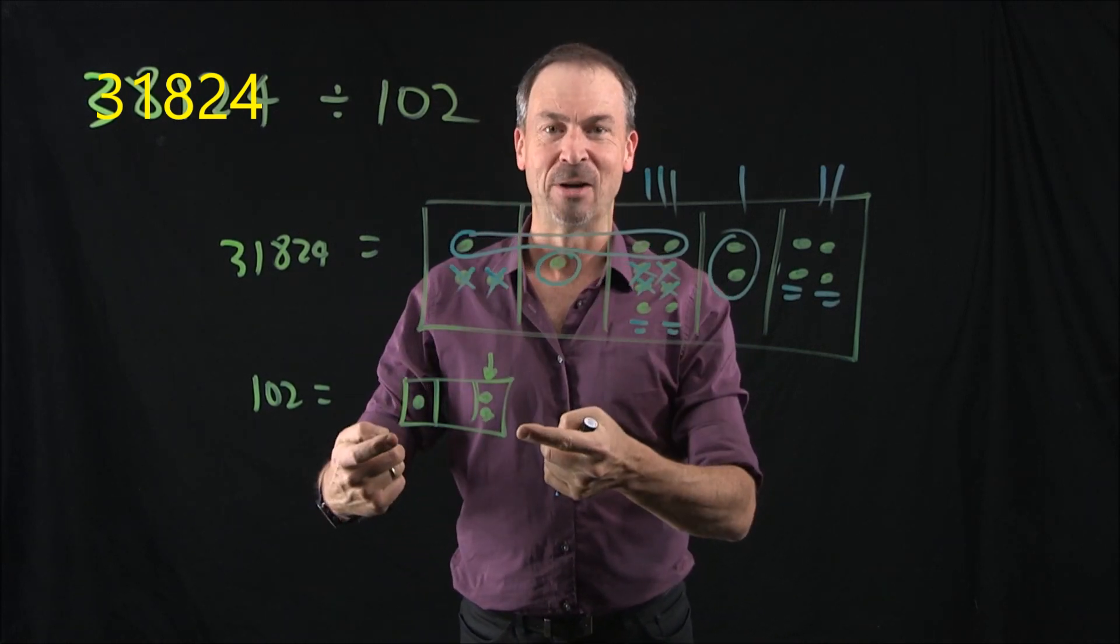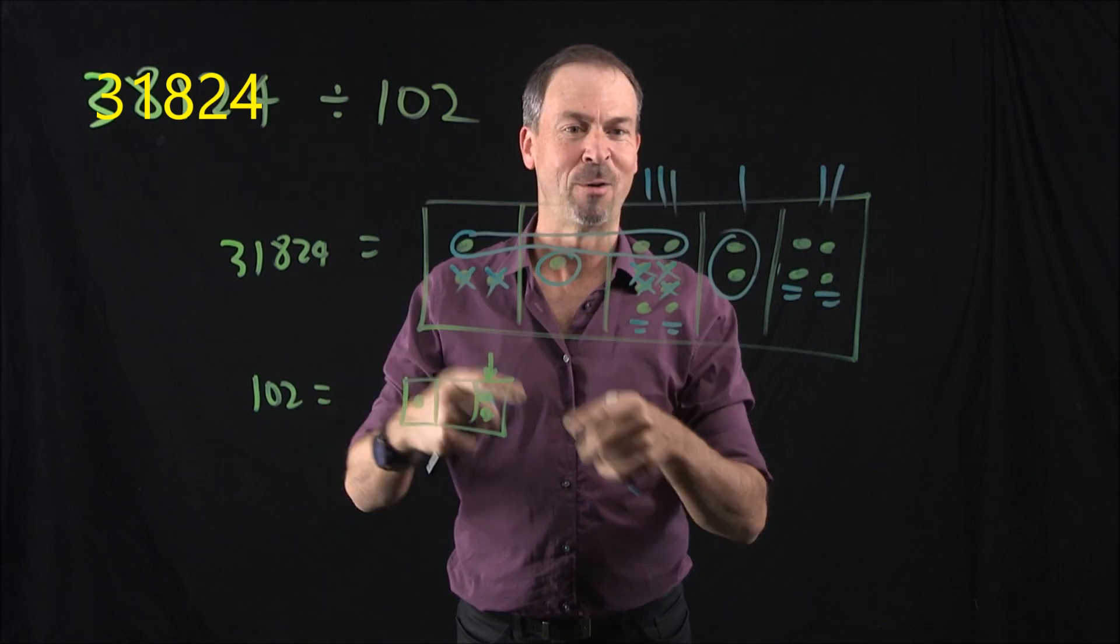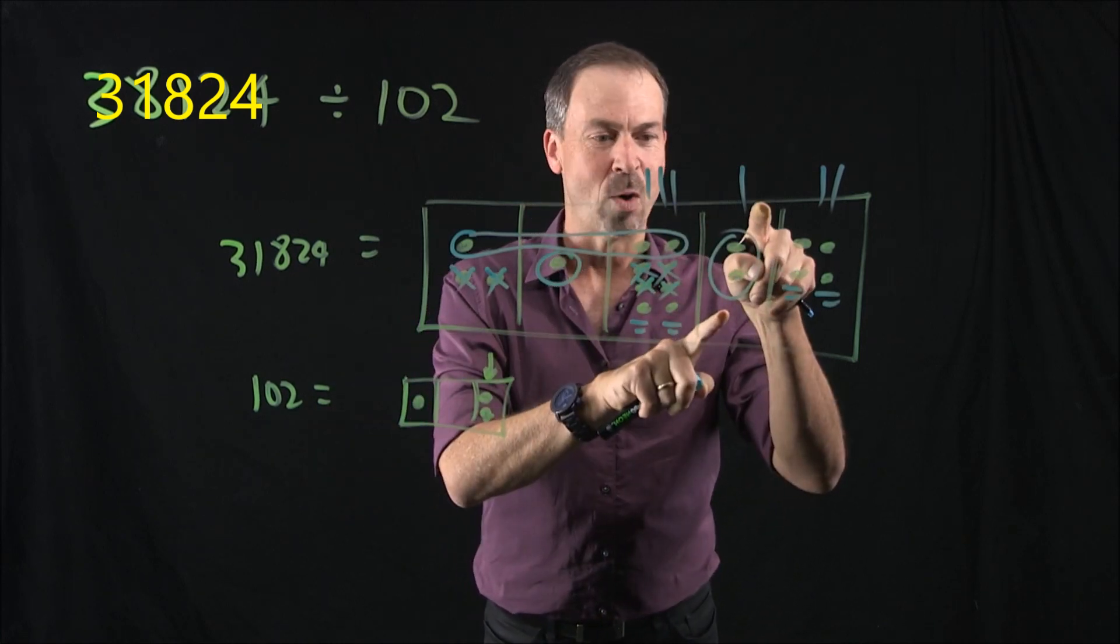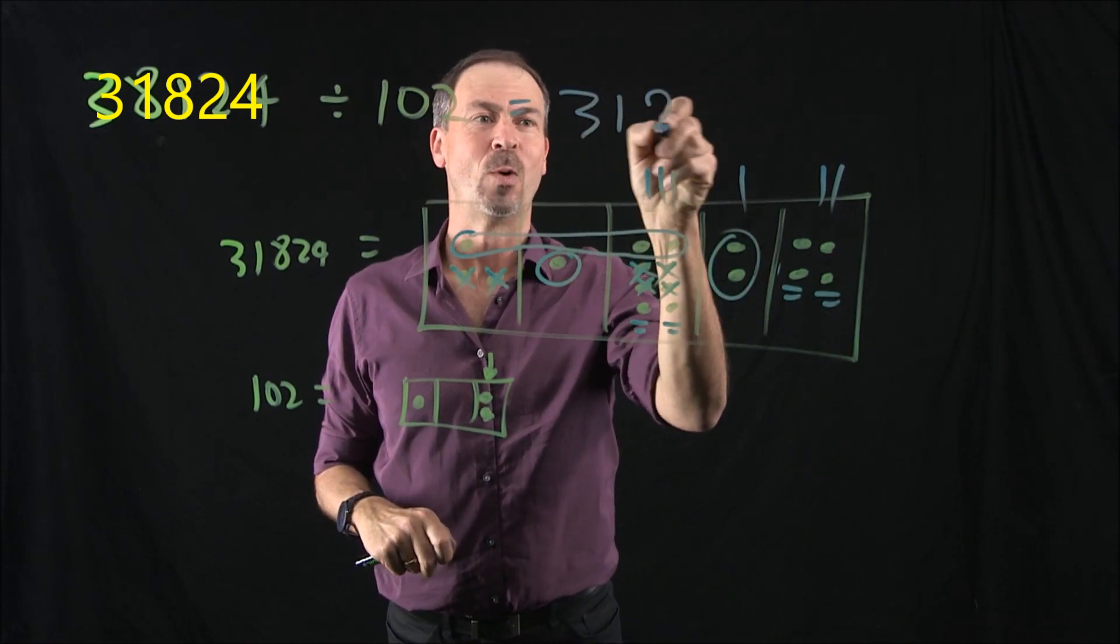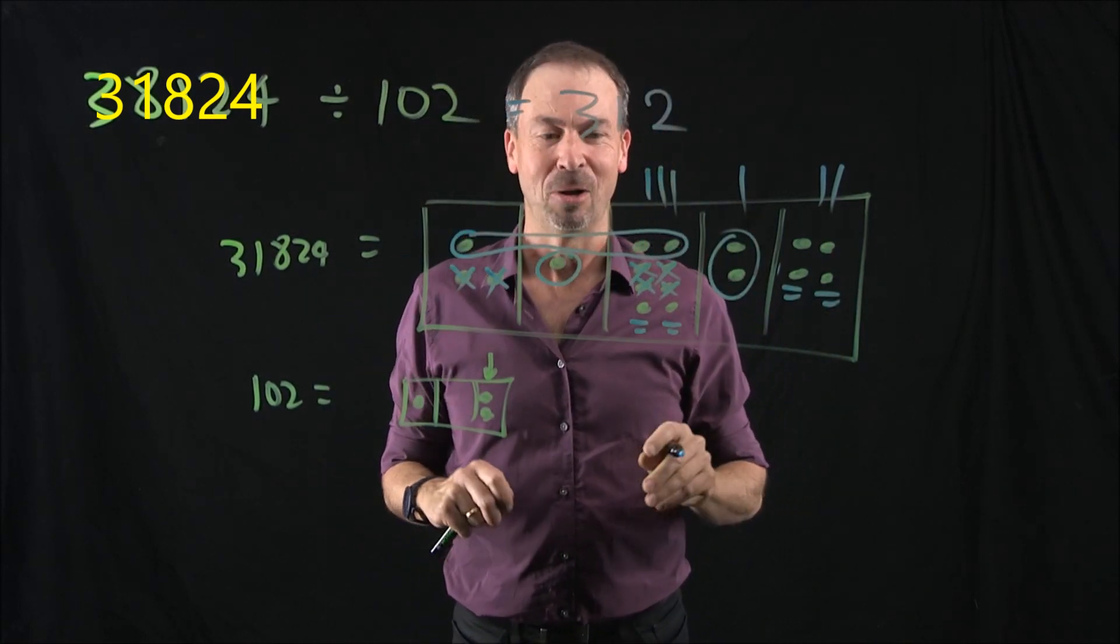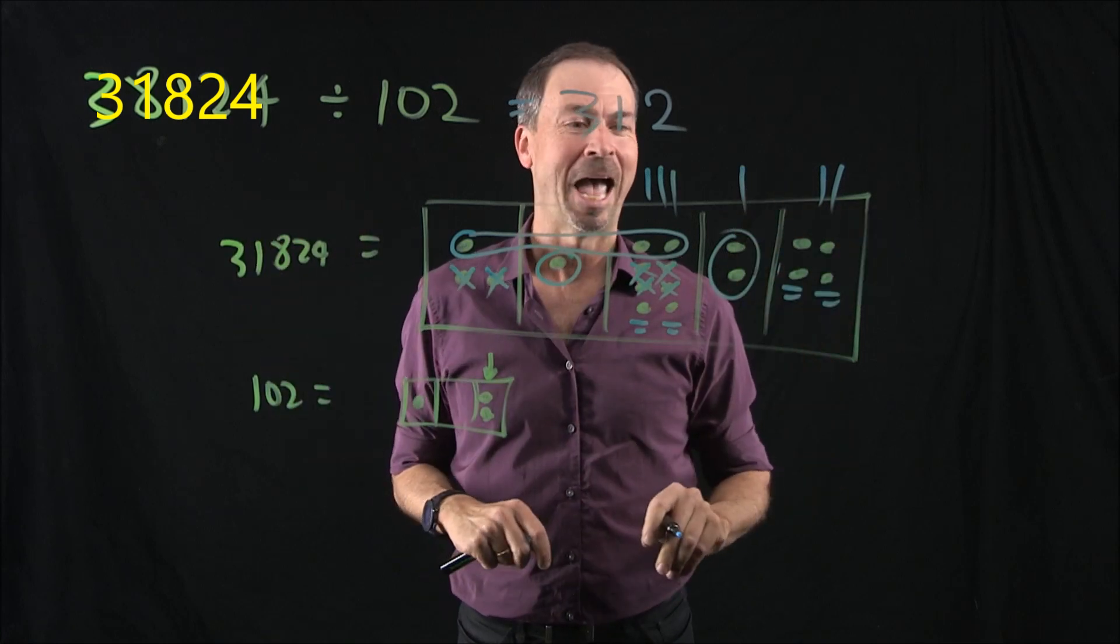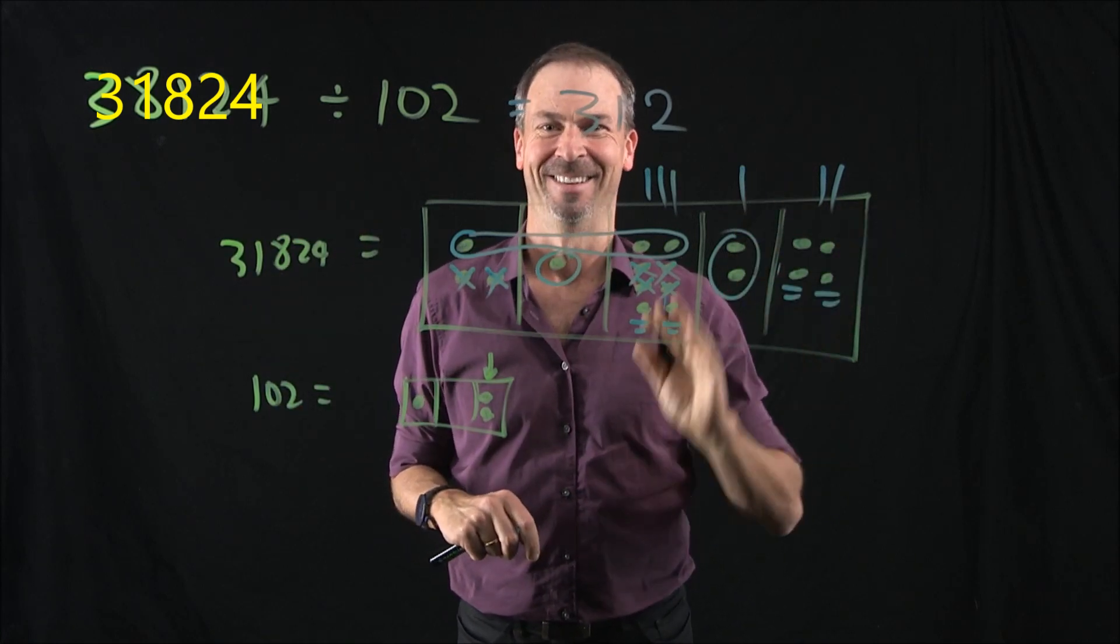And look, we've found a lot of groups of 102 in this picture. In fact, we've found 3 at the hundreds level, 1 at the tens level, and 2 at the ones level. The answer must be 3, 1, 2. We just did long division purely with pictures. How gorgeous is that? Loads of fun!